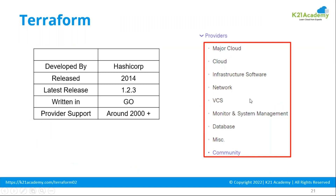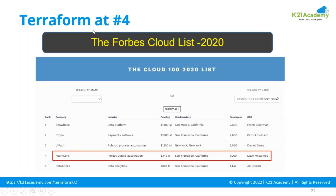These are the provider names I just showed you live on the website. Also, looking at one statistic from Forbes, Terraform was ranked as the fourth tool for automation. This data is from around 2020, so it's about two years old — the ranking will have improved further, it might be second or third now.